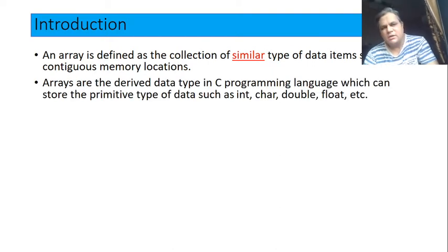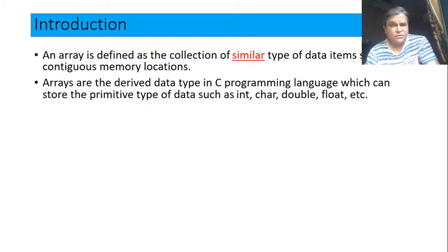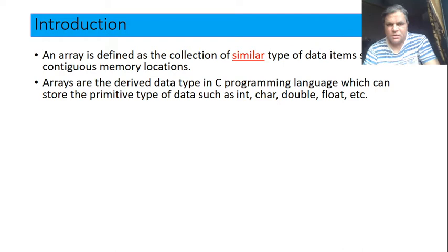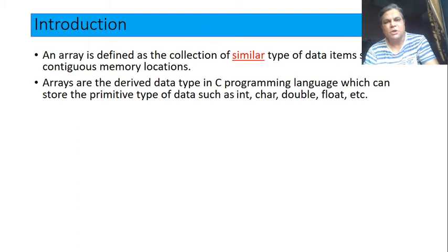Arrays are basically derived data types in C programming. C supports three major types of data types: first, basic or inbuilt data types; second, user derived data types — an example of which is array; and third, user defined data types, examples of which are structure and union. Right now we will concentrate on the second type, user derived data type — array.